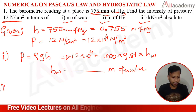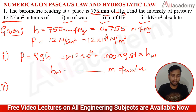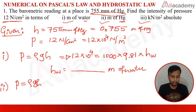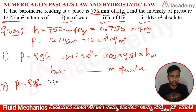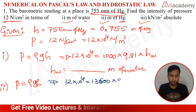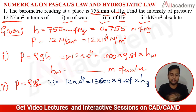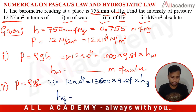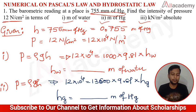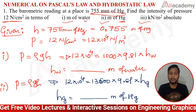For the head in terms of mm of Hg, use P = ρgh with the density of mercury (13,600 kg/m³). So 12 × 10⁴ = 13600 × 9.81 × H_Hg. Simplify: H_Hg = 12 × 10⁴ / (13600 × 9.81), giving the answer in meters of mercury. Please calculate and let me know the answer in the comment section.